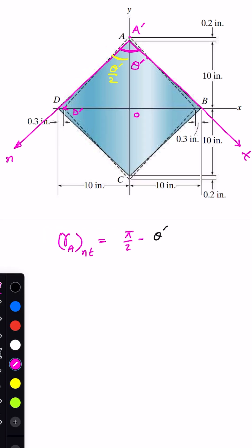If we use this triangle A dash D dash O triangle, and if we apply tan theta divided by 2, we can say tan of theta dash divided by 2 will be equal to this perpendicular divided by this base.